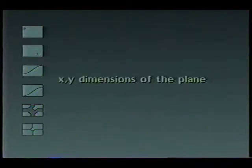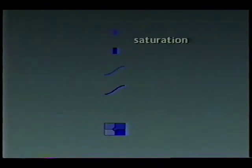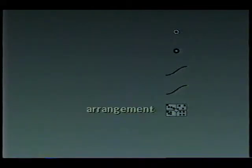Our matrix of visual variables includes the x and y dimensions of the plane, size, color value, color hue, color saturation, orientation, shape, arrangement, texture, and focus.